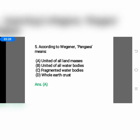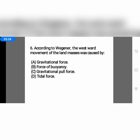Question number six: according to Wegener, the westward movement of land masses was caused by — option A, gravitational force; option B, force of buoyancy; option C, gravitational pull force; or option D, tidal force. There were two kinds of forces: gravitational force and tidal force. The westward movement of land masses was caused by the tidal force, so the answer is option D.